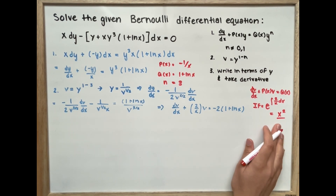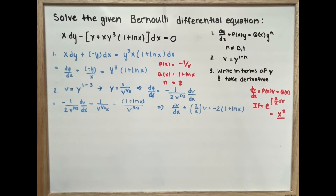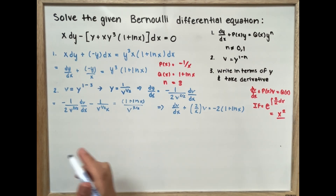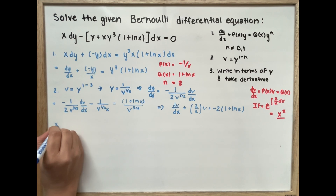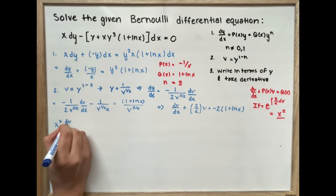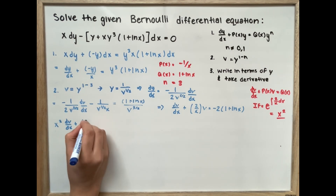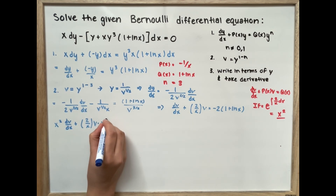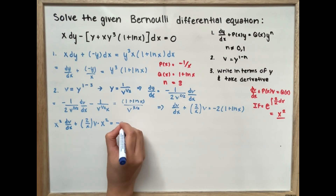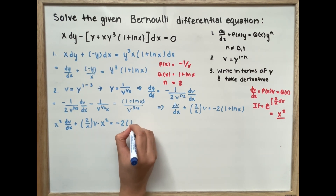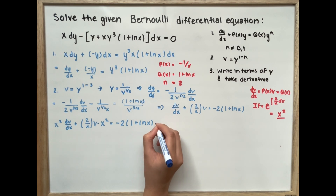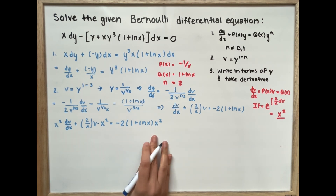Now we're going to multiply all terms of our equation by the integrating factor. We get x squared times dv over dx plus (2 over x) times v, multiplied by x squared, which is equal to negative 2 times (1 plus ln of x) multiplied by x squared.